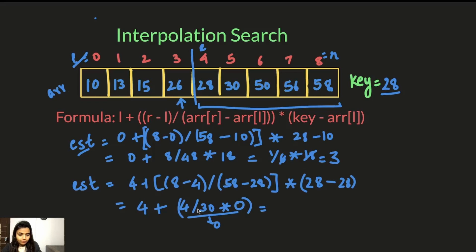So we have 4 plus 0 which is 4. Now we check, we compare the key with the array of 4. 28 is equal to 28. Hence this is the index of the key and our search is successful.